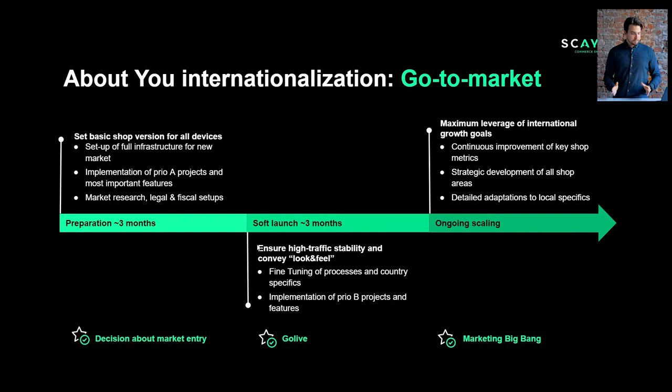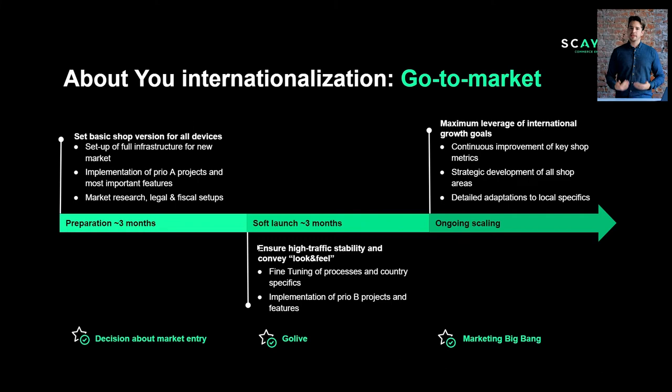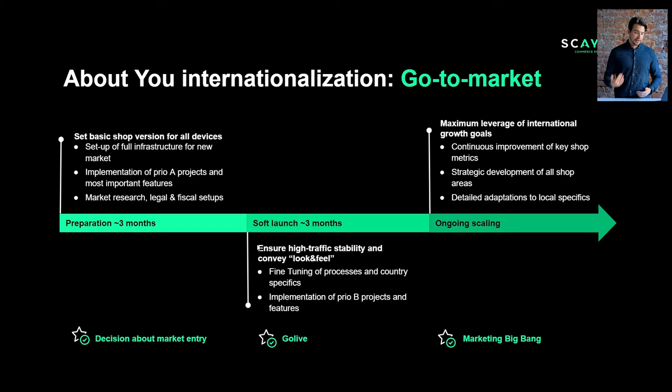We then have a soft launch window of around two to three months, during which we make sure that high traffic can be supported, that operations run smoothly, and we build a safety corridor in case a feature is missing — for example, this is the period during which we found out in Denmark that we had to integrate MobilePay. Then we have what's called our big bang — our marketing launch — during which we really announce 'here we are,' using all online and offline marketing channels to get our message across that About You is now in the market and we plan to become one of the most important players.